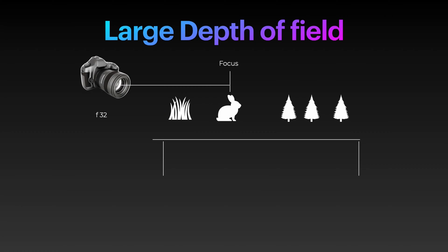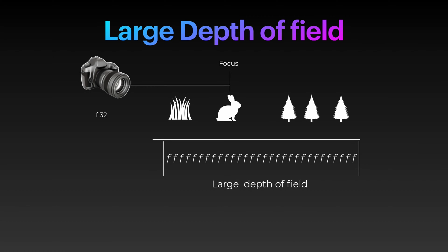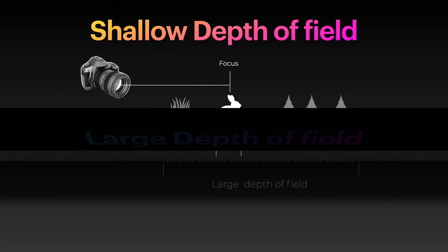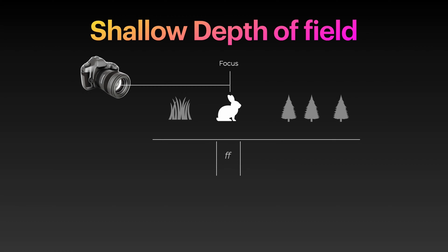A simple way of remembering this: if the f number is large like f32, think of a bunch of letter f's laid out on the floor — the length of the focus area or depth of field is large. If you have a small f number like f1.2, this means you have a very small amount of f's on the floor, meaning the depth of field is small or shallow. So the larger the f number, the larger the depth of field.